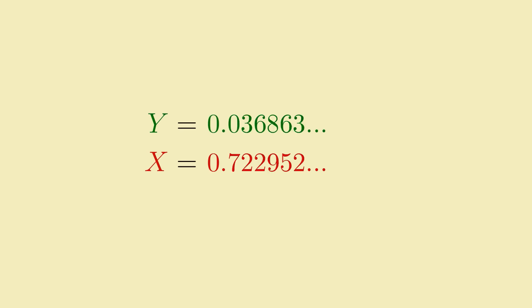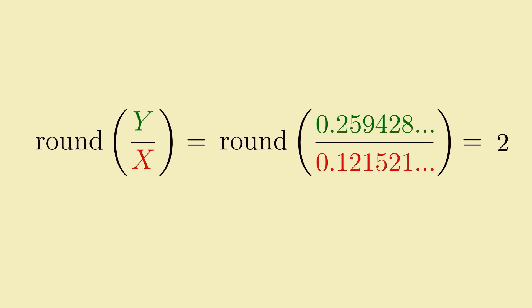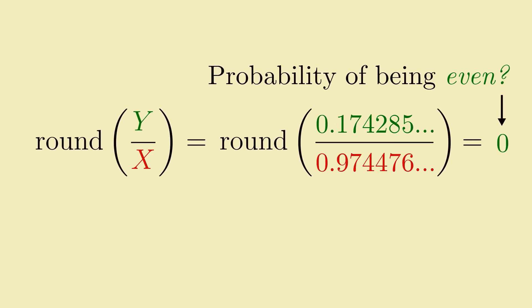Pick two random numbers, x and y, in the interval 0 to 1. Then divide them y over x, and round the result to the nearest integer. What is the probability that you get an even number?